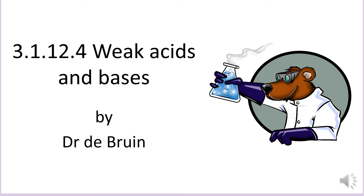This revision video is the fourth in a series about the A-level chemistry topic of acids and bases. In this video we define a weak acid and base, and examine how to use the equilibrium constant Ka to calculate either the pH of the acid if we know its concentration, or its concentration if we know its pH.